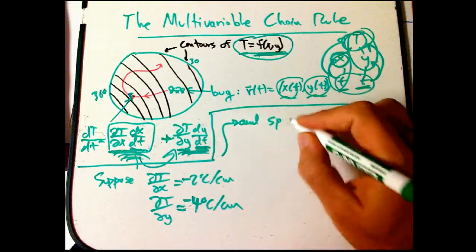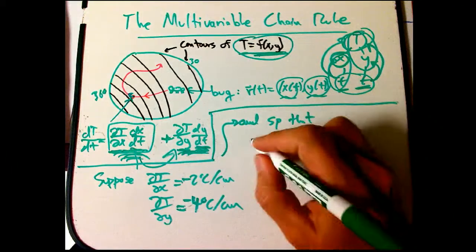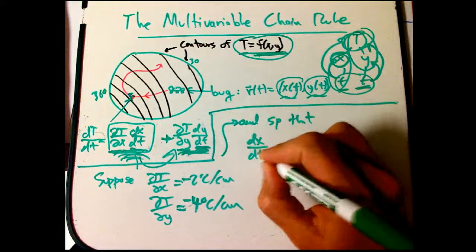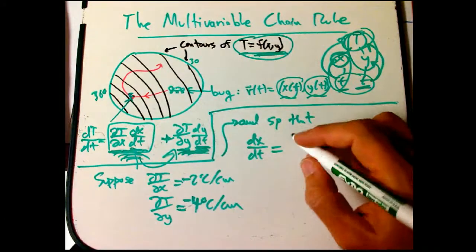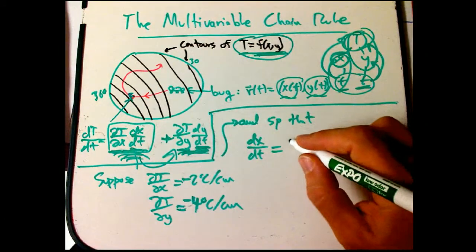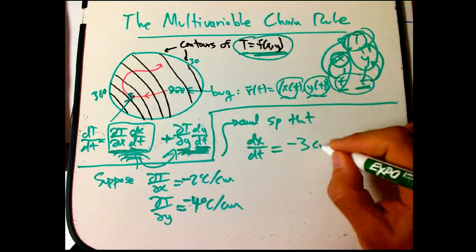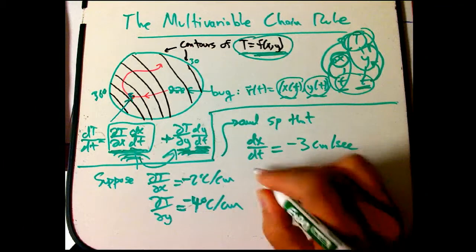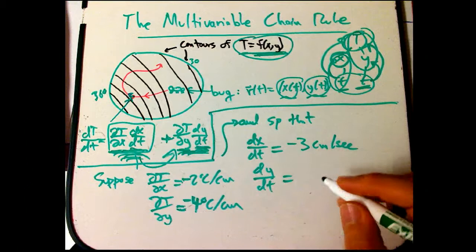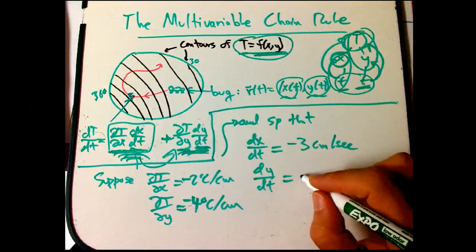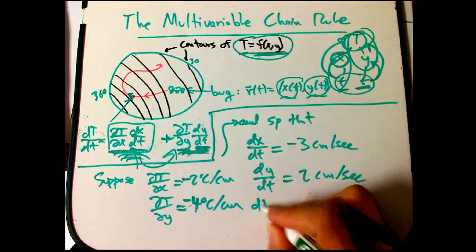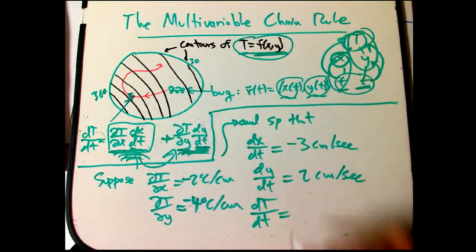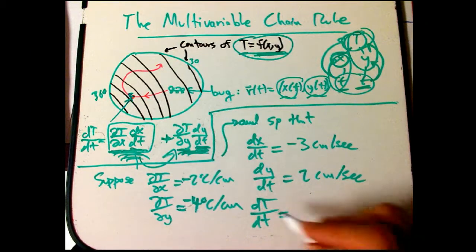And suppose that the bug is moving. This arrow looks like it's going to the left and up. So dx dt, let's say it's minus 3 centimeters per second. It's a pretty fast bug. dy dt, let's say that is plus 2 centimeters per second. So what's the rate of change of temperature that the bug experiences as a function of time?